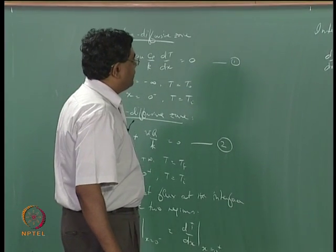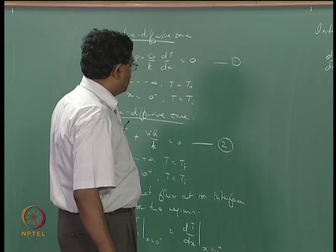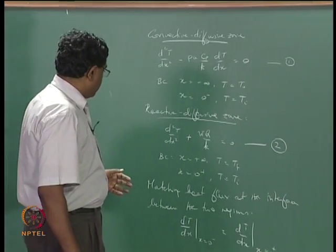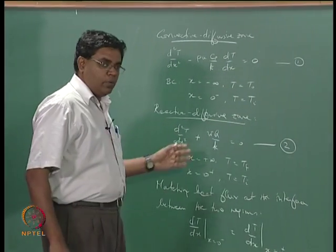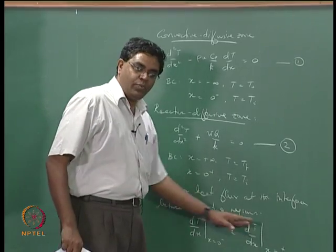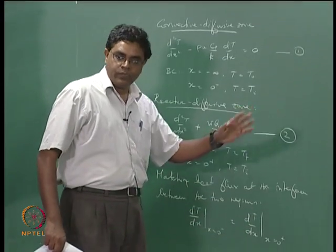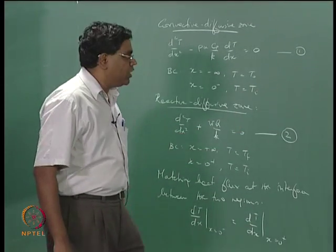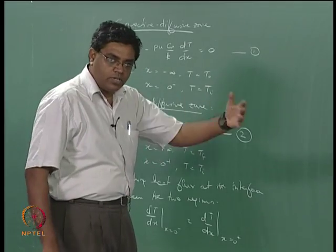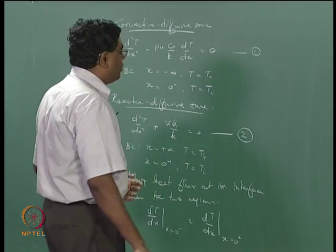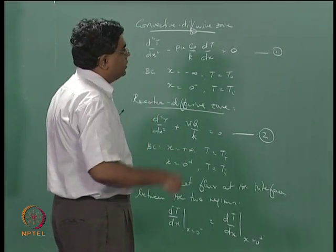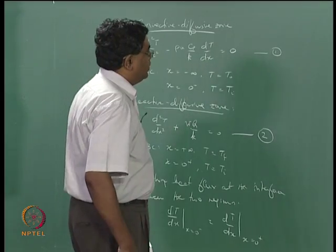What we have to do next is integrate the second equation, get a slope from there evaluated at x = 0+, and then equate these two. That is how we expect to obtain u — that is what is down the pipeline.